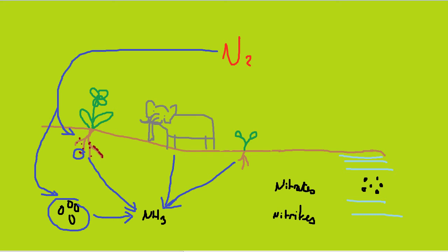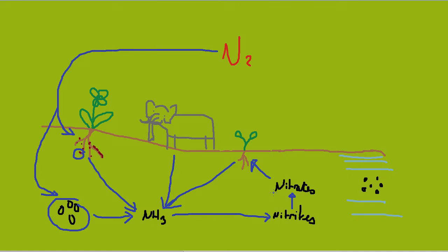The third stage is the conversion of ammonium ions into nitrates, which are usable by plants. This is done in two stages: first, ammonium ions are converted into nitrite ions, which are then converted into nitrate ions that can be taken up by plants. This is all done by aerobic bacteria, which means they need oxygen.